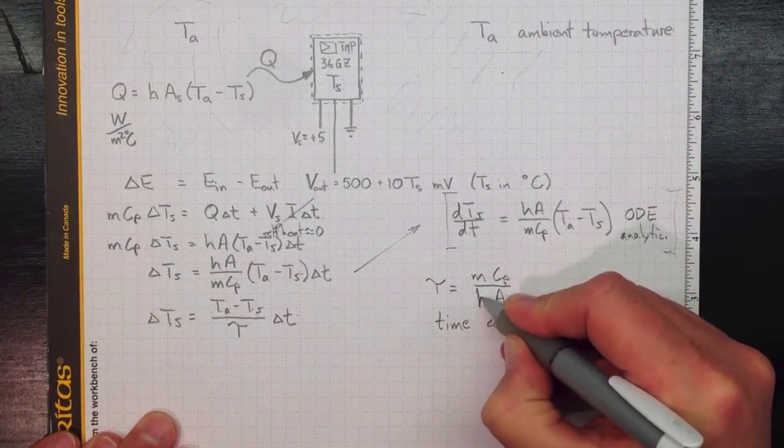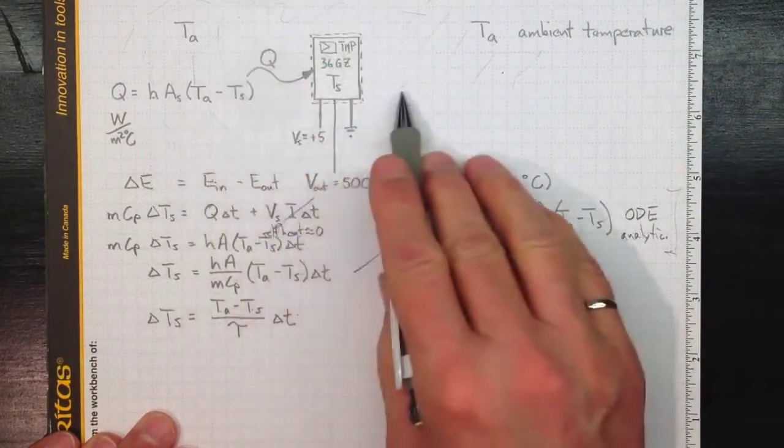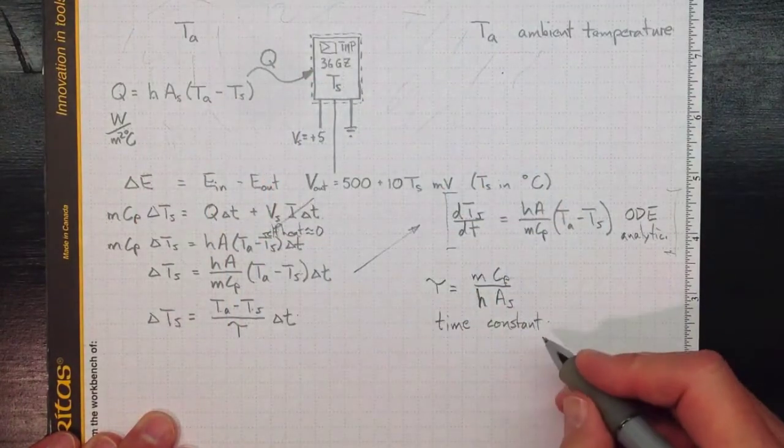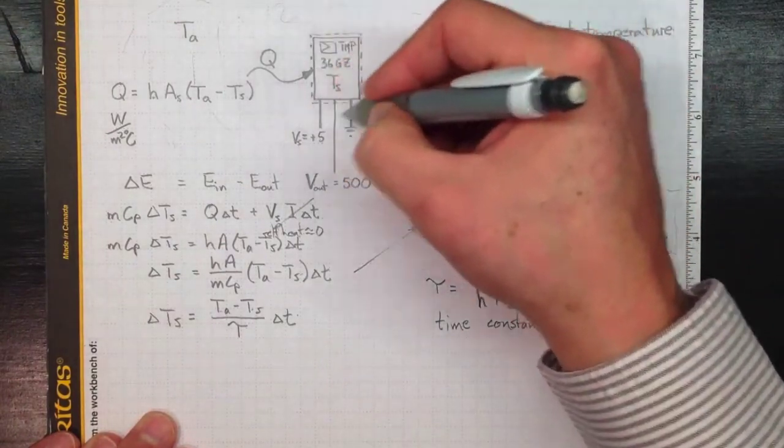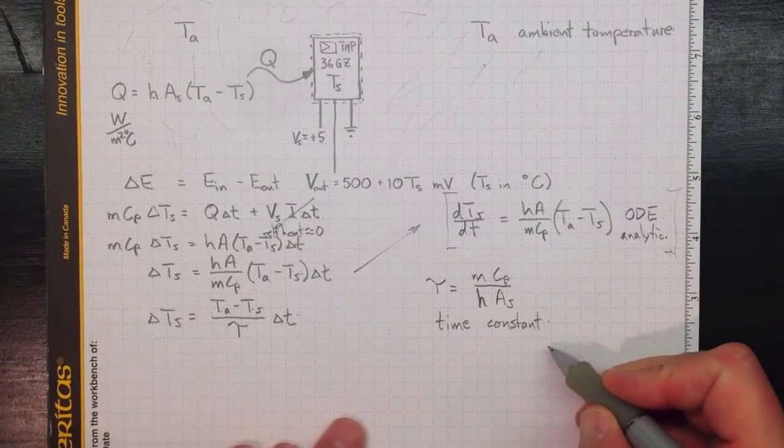This H, this heat transfer coefficient, which is all about what the surroundings look like and how the heat transfer takes place, and the overall size of the sensor. And let's check the units on that.